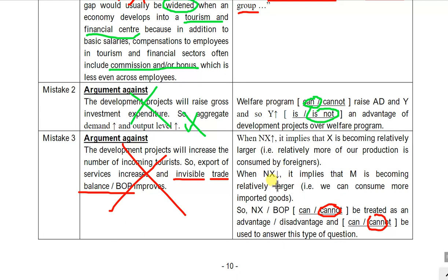Similarly, for a decrease in net export — when imports become relatively larger, net export will decrease. You may think this will worsen the economy because GDP and AD will drop. However, if we import more, that means we can consume more, and if we consume more, our living standard is higher than before. So we have something good from the increase in imports as well. That's why I won't say that the change in trade balance or balance of payment is something good or bad. Don't use balance of payment to answer questions about arguments for or against a proposal.